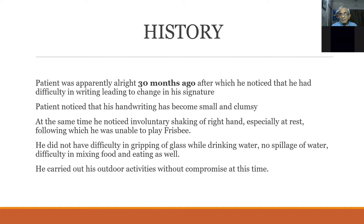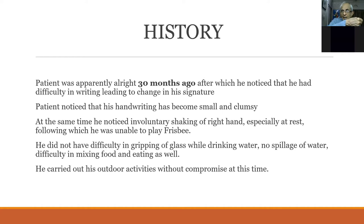In spasticity, resistance is present initially and then gives way suddenly — the clasp-knife phenomenon. In rigidity, resistance is present throughout; if superimposed with tremors, there can be cogwheeling. In spasticity, tone is increased in antigravity muscles. To flex the hand is against gravity, so there is stiffness of the biceps and the hand is always kept in a flexed position — when you try to extend it, it comes and then gives way suddenly.